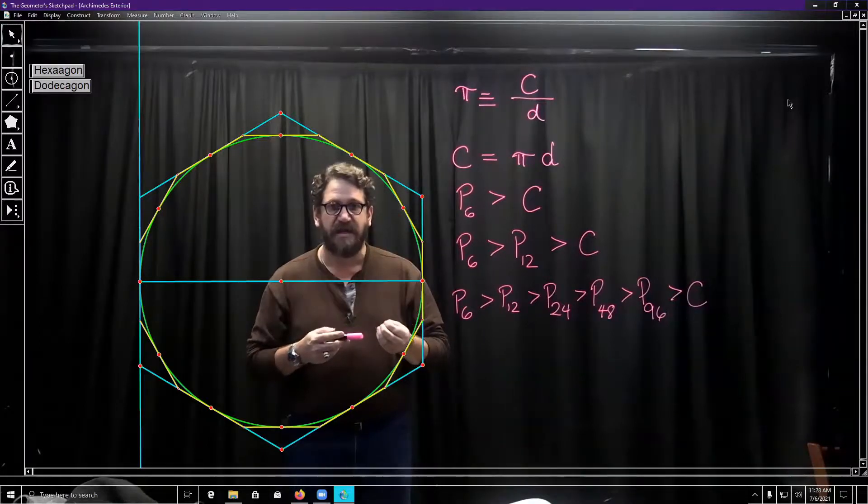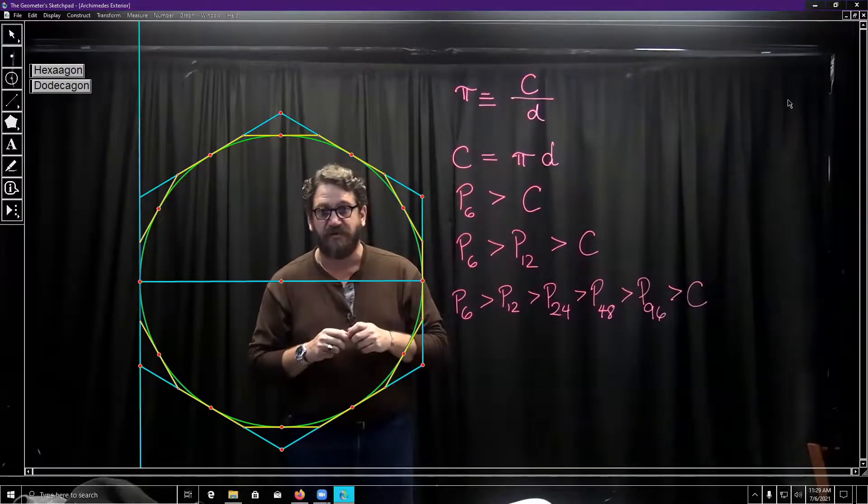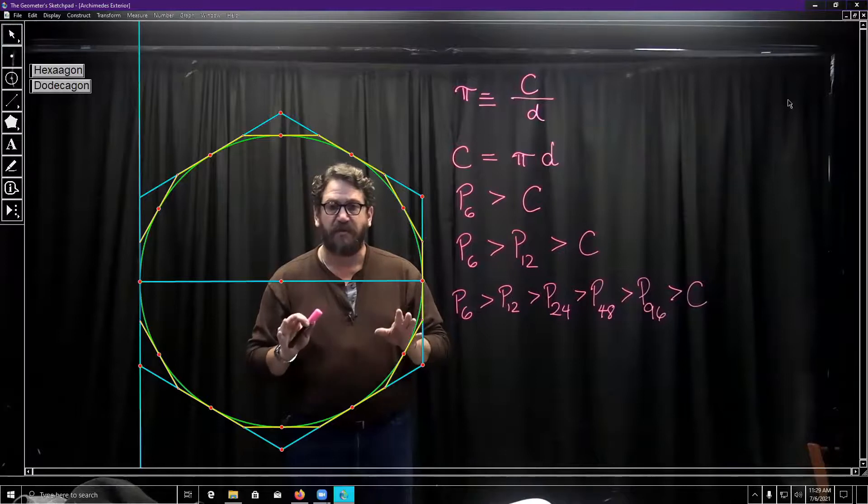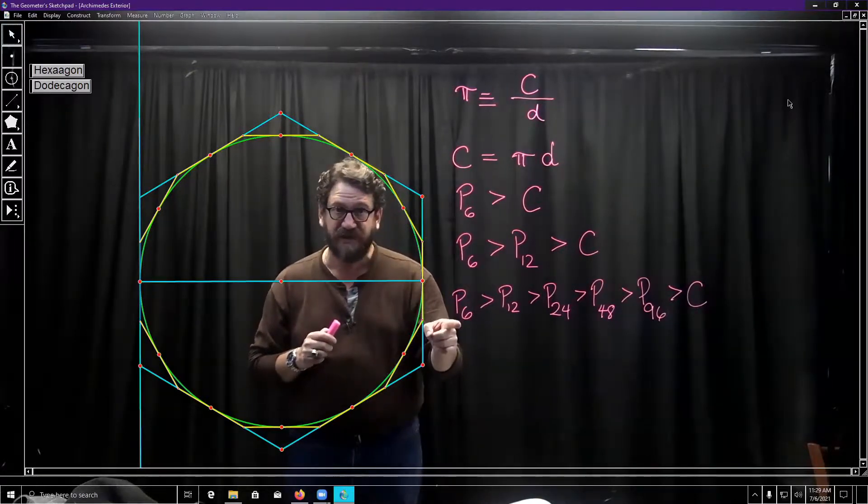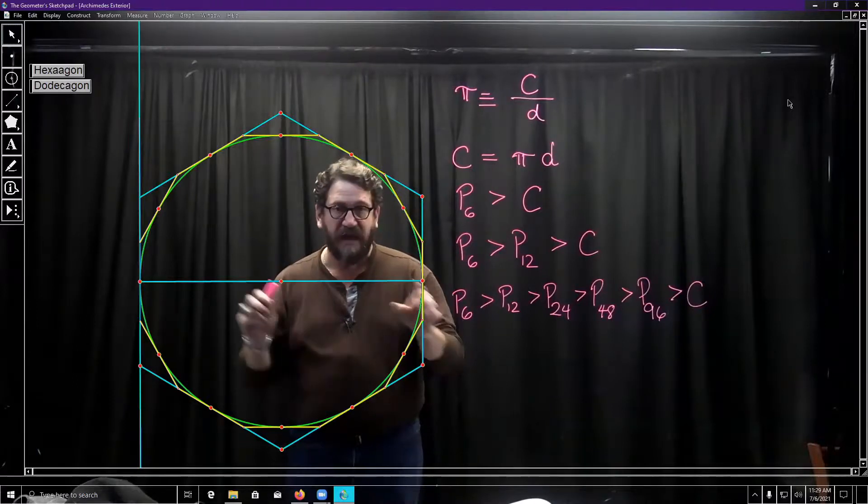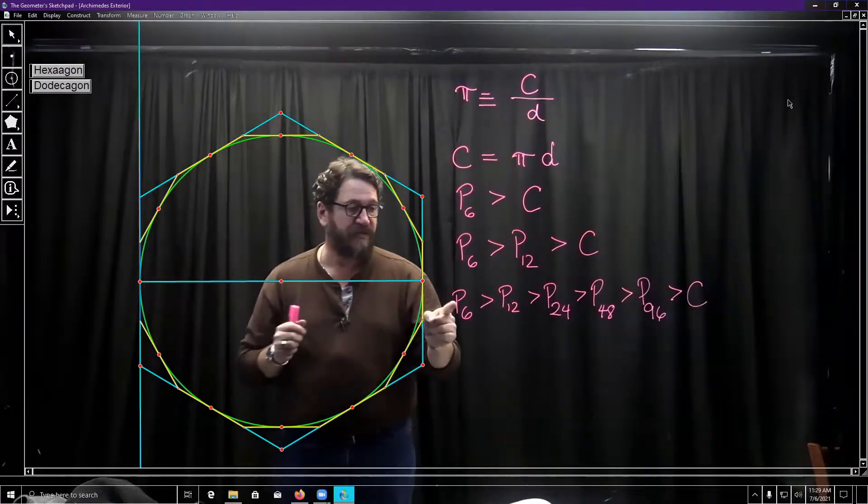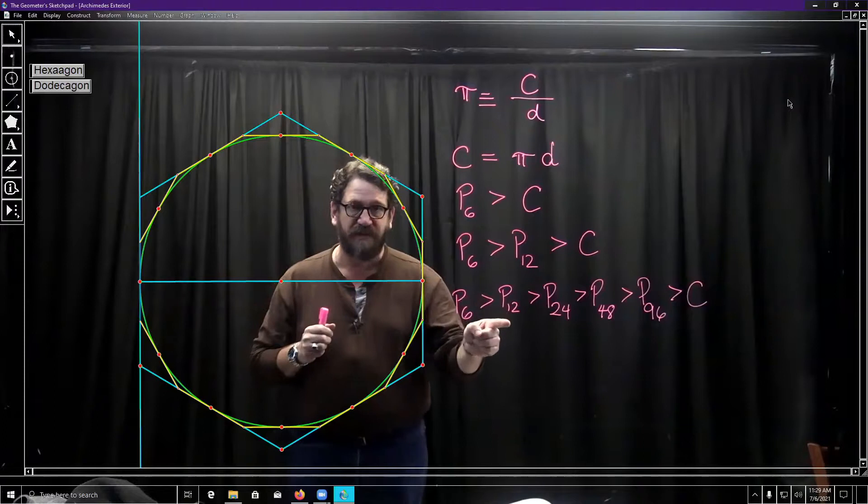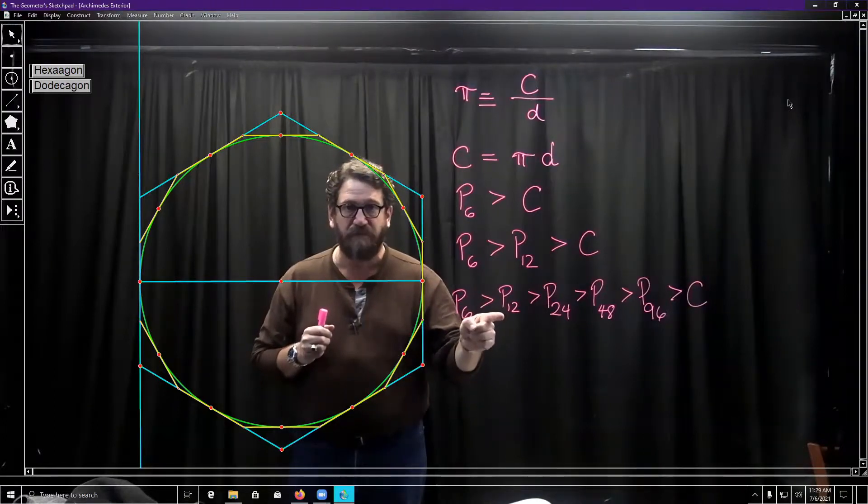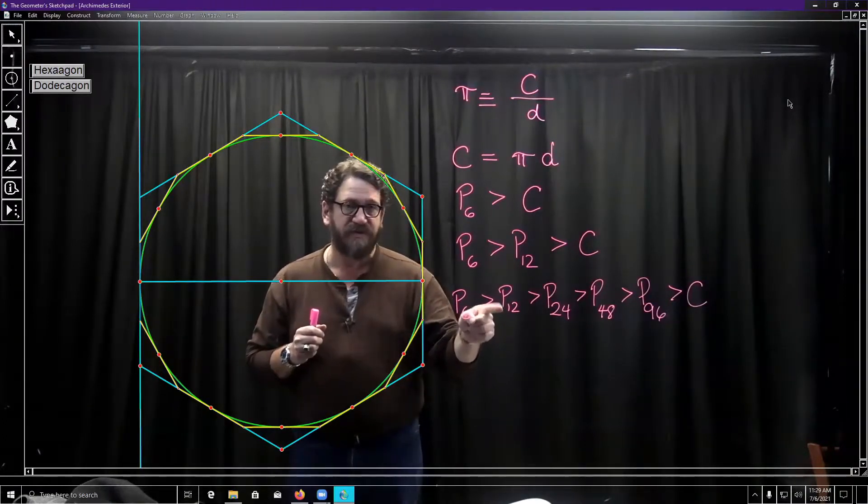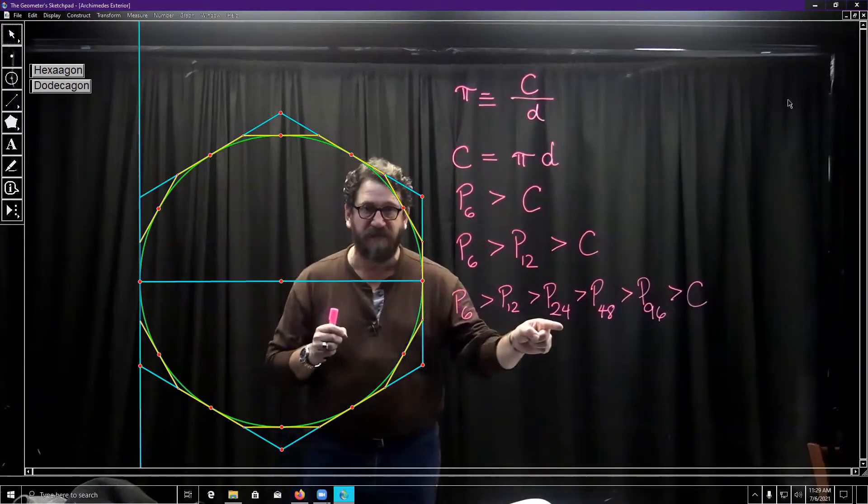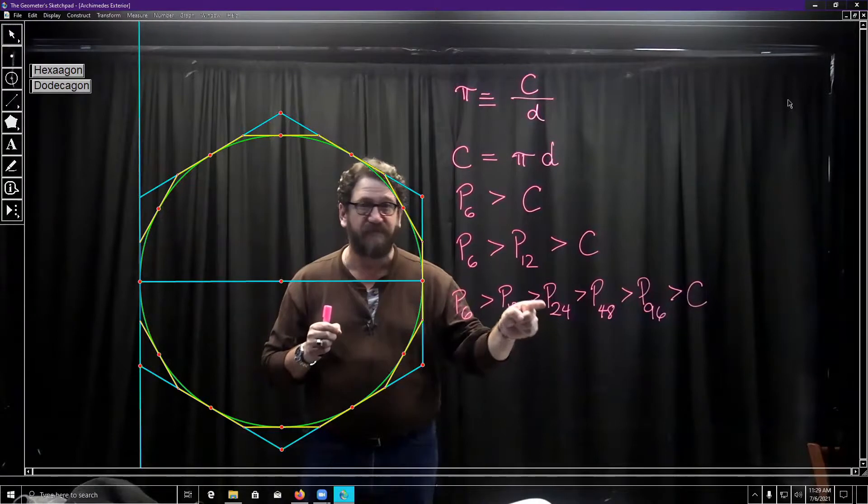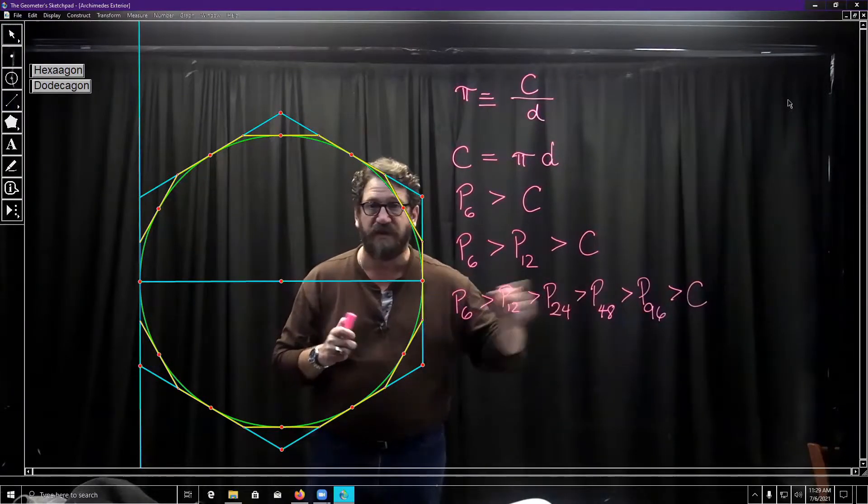And the reason is we're going to build what's called an iterative process, a process where when I figure out information about the six-sided and how it relates to the circle, that's going to give me information that lets me figure out what's going to be the 12-sided. And once I know the 12 and how it relates to the circle, that leads me to information that lets me solve the problem of the 24, the 48, and the 96.